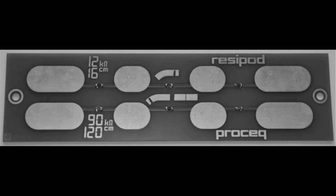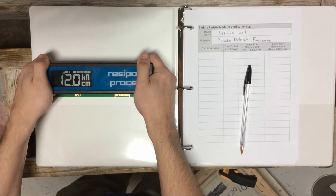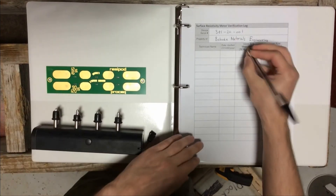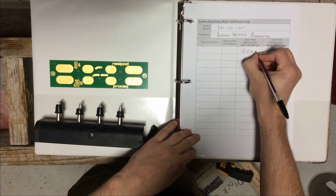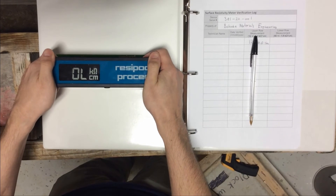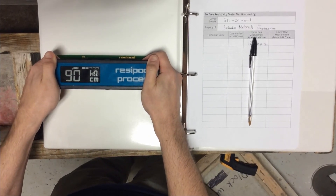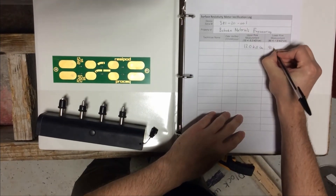The first thing you should always do before testing is verify the probe is operating correctly. Certain models will have a tool, like the one being shown, to help verify the probe is working. The way this tool works is by pressing all four probes down on the gold plates. The top row will read at or close to 12 kilohm centimeters for 38 millimeter probes. The bottom row will read at or close to 90 kilohm centimeters for 38 millimeter probes. Record all verification values prior to testing.